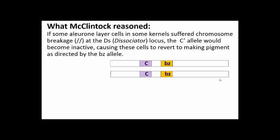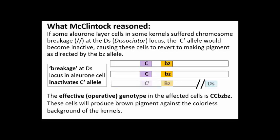This was not what she expected. Here's what McClintock reasoned to explain her observations. For some cells to have reverted to pigment production, the C' allele must have been inactivated. McClintock hypothesized that this could happen if the chromosome containing the C' allele were somehow damaged or broken — in other words, its activity was disrupted. She suggested that the unstable DS locus was occasionally active, causing chromosome breakage and thus inactivation of the linked C' allele in a given cell and its progeny. Without an active C', those cells that had experienced the dissociation — the DS effect — would make brown or purple pigment while the surrounding cells remained colorless, leading to the variegated mosaic kernels.